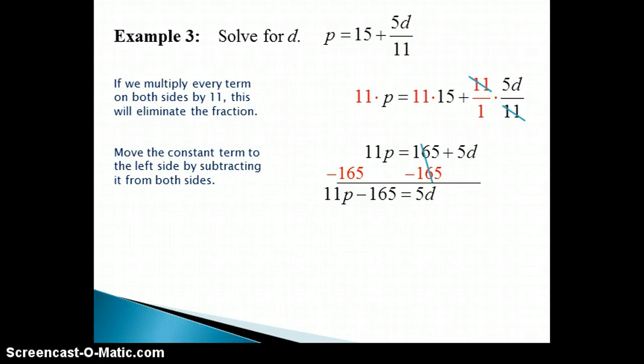This leaves us with 11P minus 165 equals 5D. Our last step, then, is to divide both sides by 5. Notice that 165 has a factor of 5.